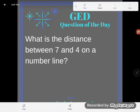Hey, GED students. It's GED question of the day. We've done a lot of problems already about the distance between a number and zero, but what about if we have two numbers? Let's take a look at that. What is the distance between seven and four on a number line?